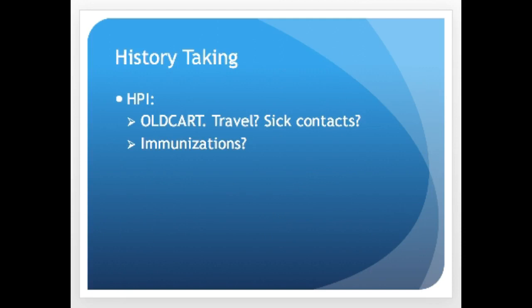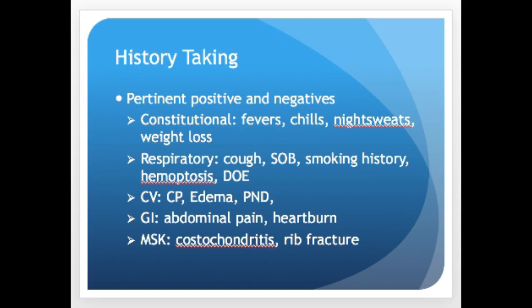When taking a health history for a respiratory complaint, ask all OLDCART questions: onset, location, severity of symptoms, duration and timing of coughing attacks, what they've tried. Beyond that, ask about recent travel, sick contacts, whether the illness has spread in their household, and their immunization status.